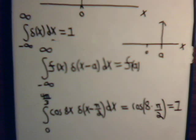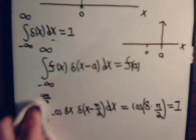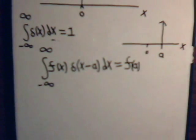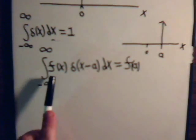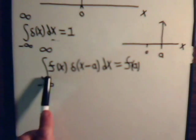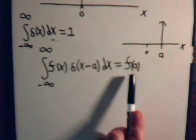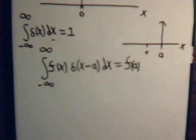And sometimes, the Dirac delta function is called the sifting function for that reason. We have a value of a function f of x, but in this integral, it only gives a value of f of, when x is equal to the value of a.